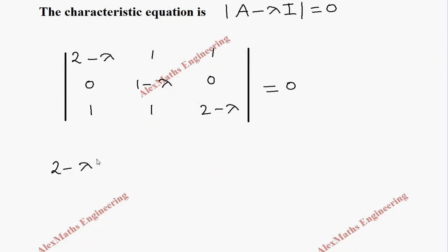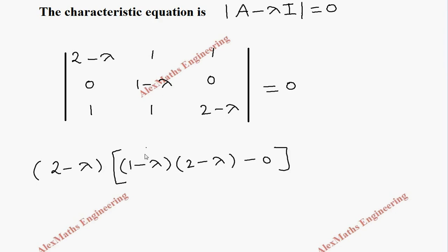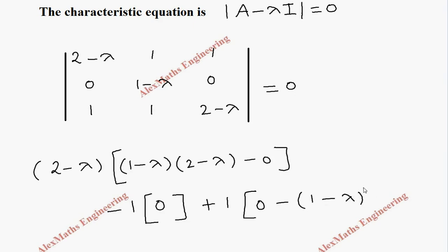So, 2 minus lambda, expanding: 1 minus lambda into 2 minus lambda minus 0. For the second element, we take minus of the number, so minus 1 into 0 — and that element is also 0. Then last: 1 into 0, then minus of 1 minus lambda, which equals 0.